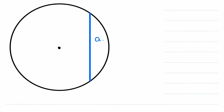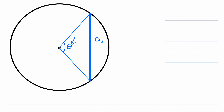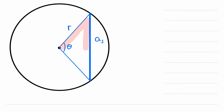We will call the area of this segment A sub S, for area of segment. Notice we can draw two radii from this circle going out to the points where the chord intersects the circle. Between these two radii is a central angle that we will say has a measure of theta degrees, and we'll say that the radius has a length of r. When these two radii intercept the circle, they create this sector, and we can see that the area of the sector is comprised of two parts.